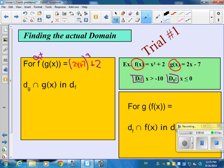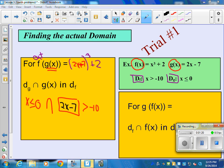Now we're going to take the domain of g of x, which is the inside, and the domain of g of x is x less than or equal to 0. Now we're going to intersect that with the domain of the outside, which is x greater than negative 10. But instead of x, we put the inside function 2x minus 7.